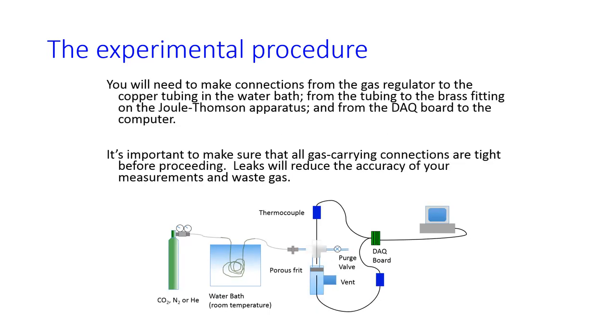You need to make sure that all of these gas-carrying connections are tight before proceeding because if gas is leaving your system anywhere that's not the vent, it reduces your ability to say what delta P actually is. You can have multiple delta P steps, which you don't want.